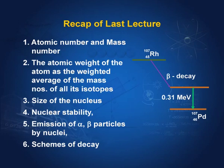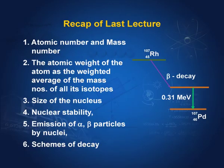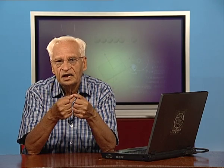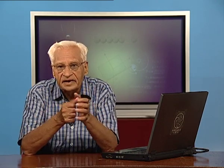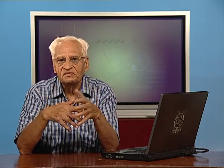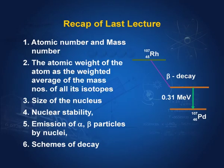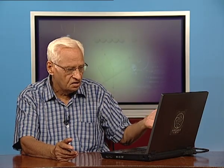Then we discussed the size of the nucleus. We found that the radius of the nucleus is proportional to the mass number raised to the power 1/3. We also discussed the nuclear stability of nuclei. We have protons and neutrons: protons repel each other, neutrons attract each other. The balance between the number of neutrons and protons determines nuclear stability, and if the nucleus is not stable, it emits alpha and beta particles and also gamma radiation.